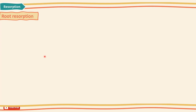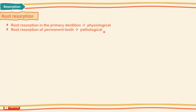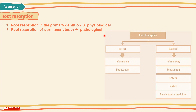Dental resorption is defined as the loss of dental hard tissues as a result of clastic activity. Root resorption in the primary dentition is a normal physiological process, unless it occurs prematurely, in which case it can be considered pathological. On the other hand, root resorption of permanent teeth is a pathological process which, if left untreated, may result in premature loss of the affected tooth.